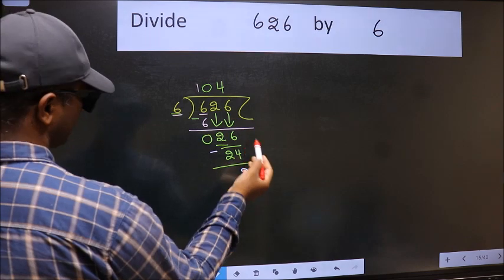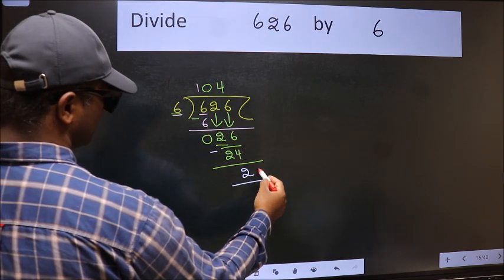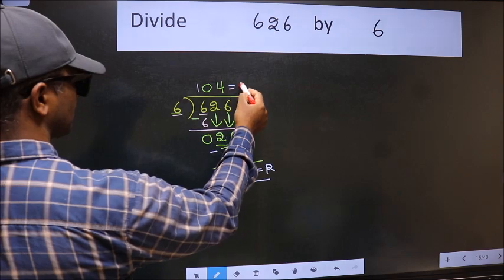No more numbers to bring down. So we stop here. This is our remainder and this is our quotient.